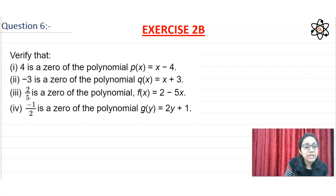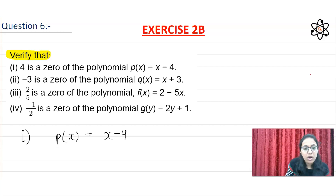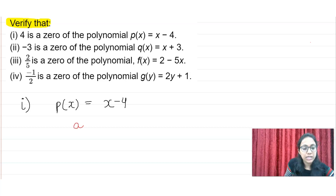In the question, you have to verify that a given value is a zero of the polynomial. To do this, we substitute the given value into the polynomial. If the result is zero, it is verified.